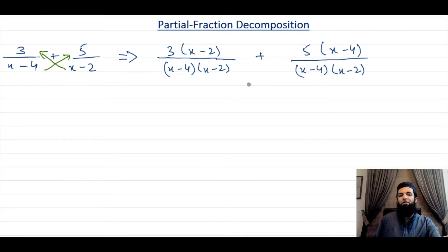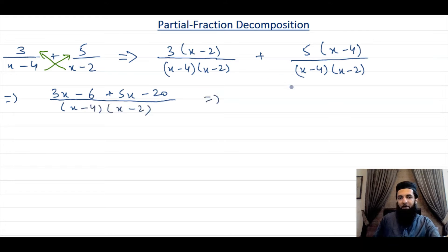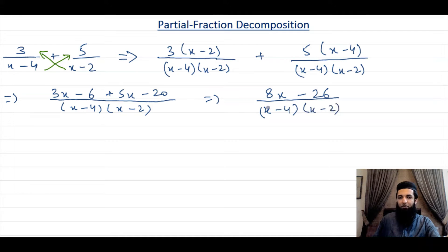If you look at it here, the denominators are the same, so now we can simply add the numerators. That becomes (3x minus 6) plus (5x minus 20), all divided by (x minus 4)(x minus 2). When you simplify this, you get 8x minus 26, all divided by (x minus 4)(x minus 2).